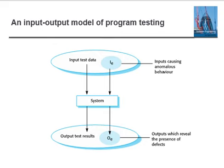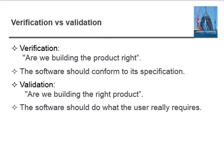Testing relates to verification and validation. Validation asks: are we building the right product? Verification asks: are we building the product right? This means the software should conform to its specification. If we are building the right product, the software should do what the user really requires.